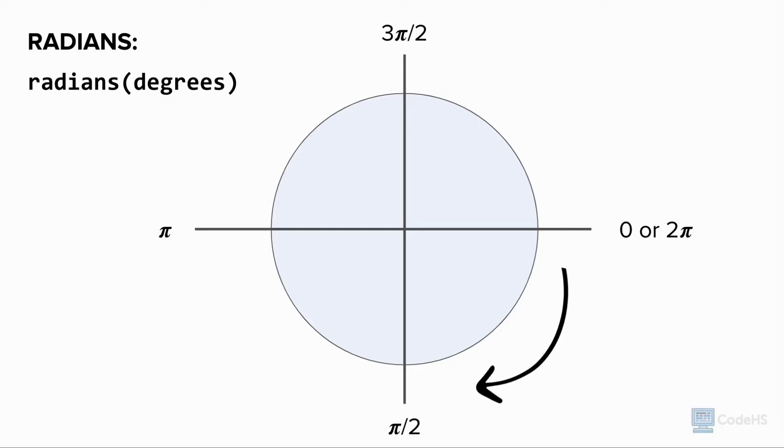While angles can have measures greater than what is shown by doing multiple rotations, we will mostly only look at angles measured up to 2 pi. One radian is about 57.2958 degrees. Thankfully, P5.js also provides a helpful function called radians that converts given degrees to radians for us.